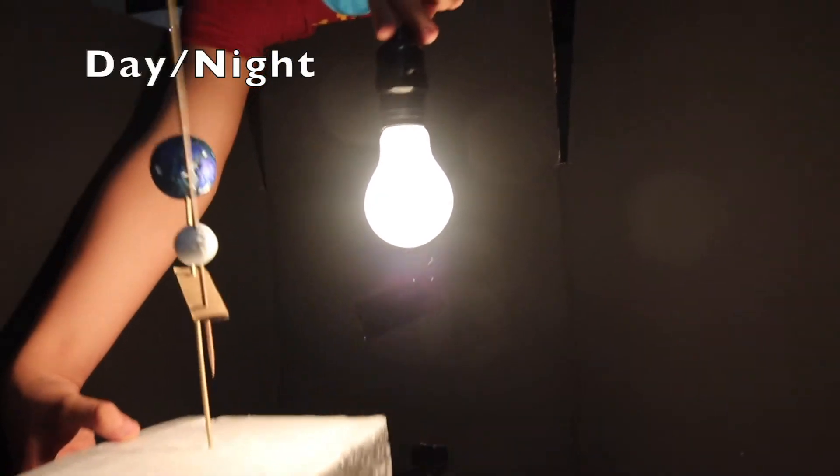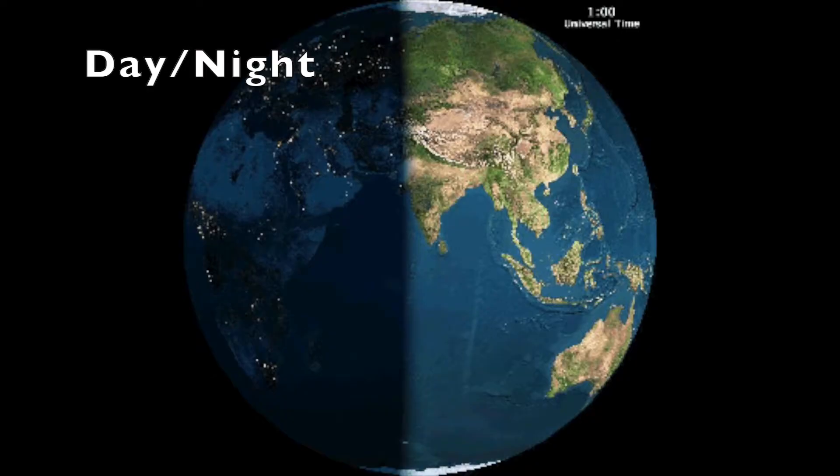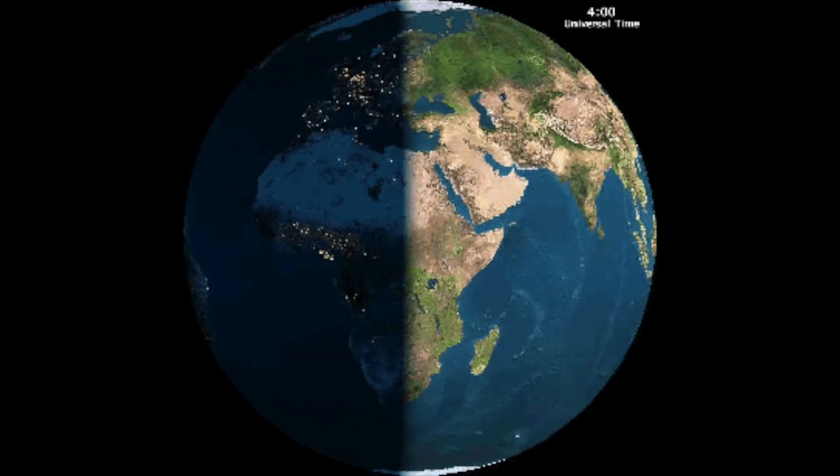The first thing we will go over is why daytime and nighttime occur. As the Earth rotates around the Sun, it is also spinning.